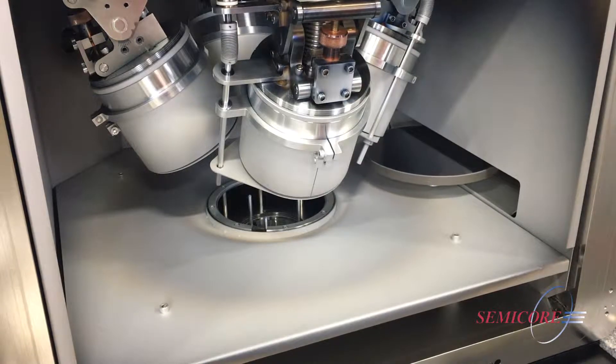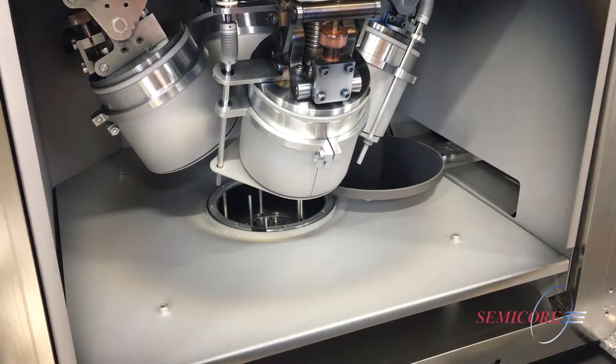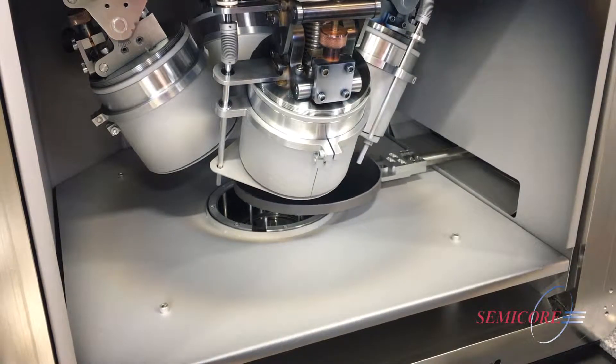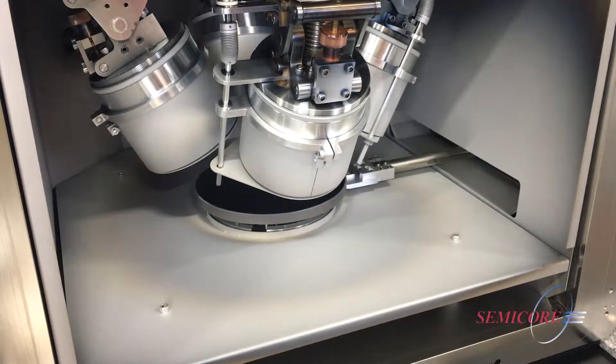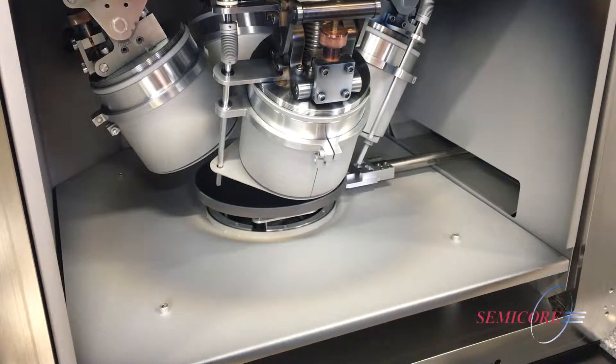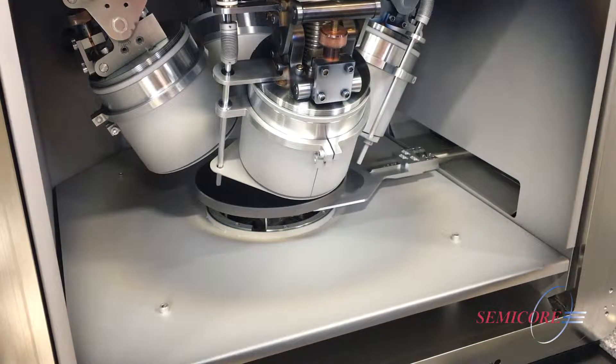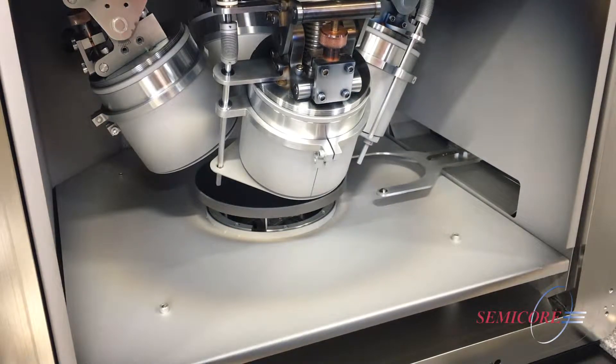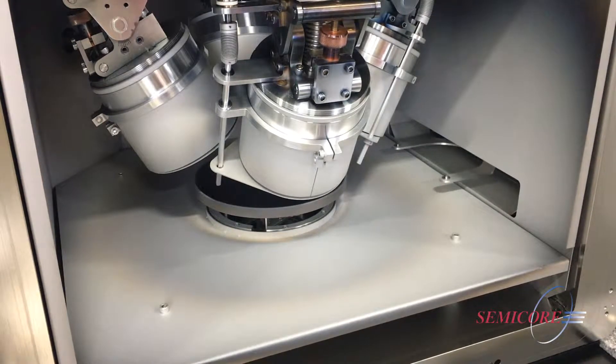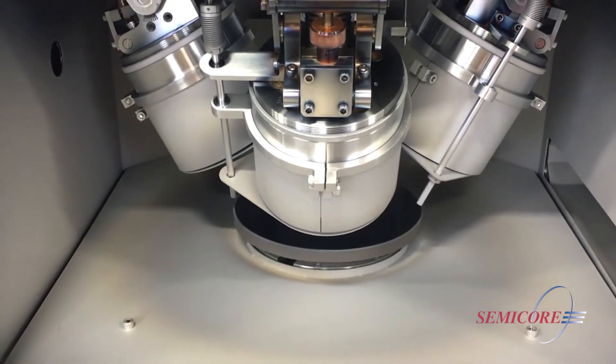The isolation valve opens, and the transfer arm positions the substrate over the rotatable substrate table in the process chamber. The table lift pins remove the substrate from the arm's end effector, which then retracts back into the load-lock chamber, and the isolation valve closes.